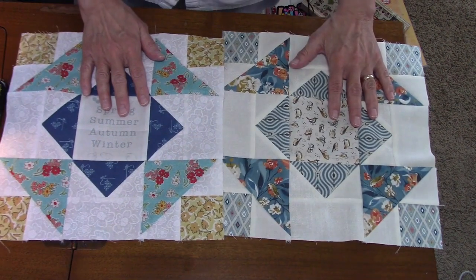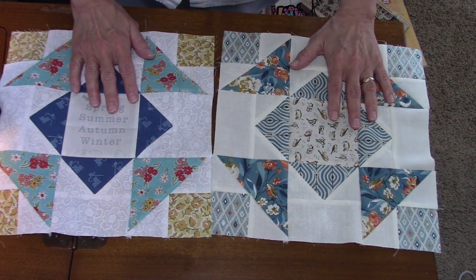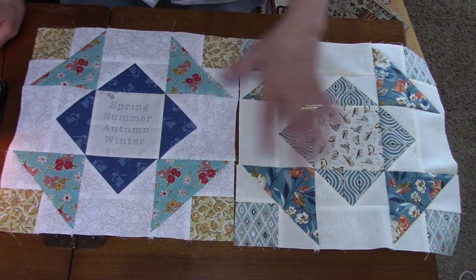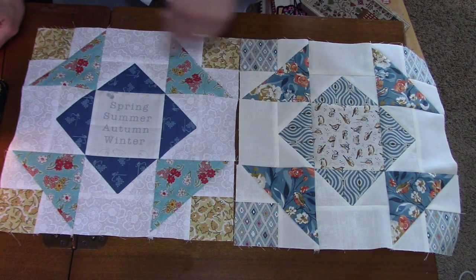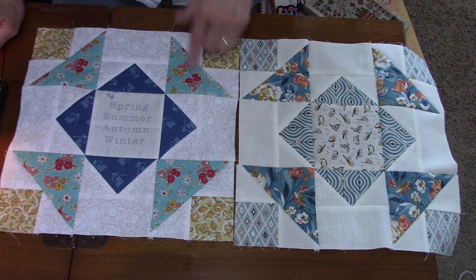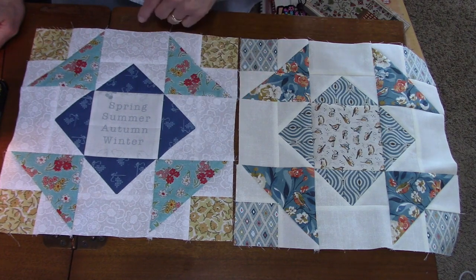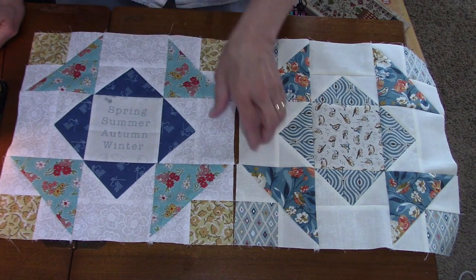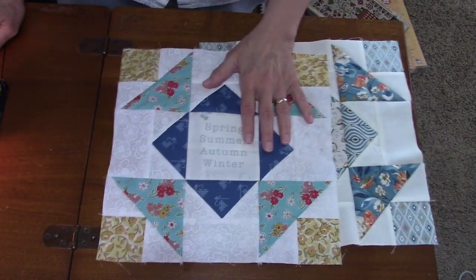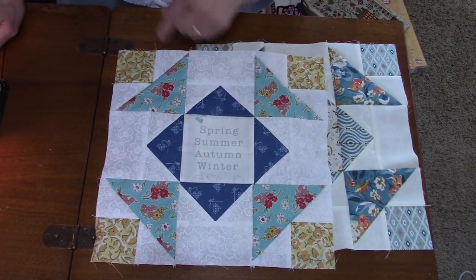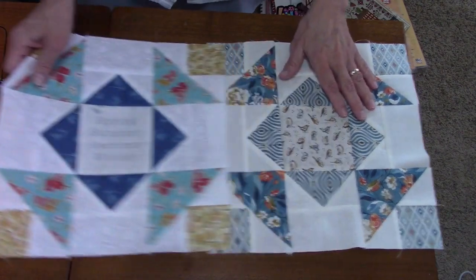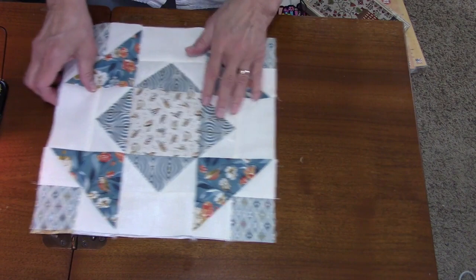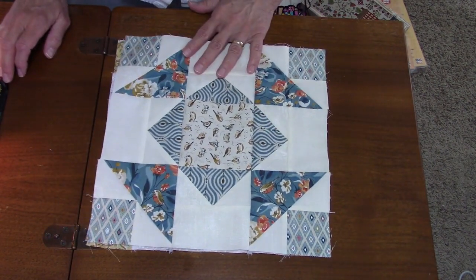I kind of used the same, I used blues in both. This one I just added the yellow squares instead of blue. Of course, it's a different background, and here I fussy cut a center piece. This is a script in here. Two different fabric lines in the same block. So hope you enjoyed this video.